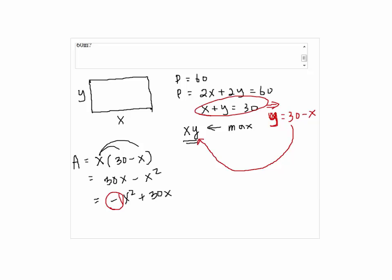Since a is negative 1, which is less than 0, we know the parabola is going to be opening down. So we can find the maximum by finding the vertex of the parabola.